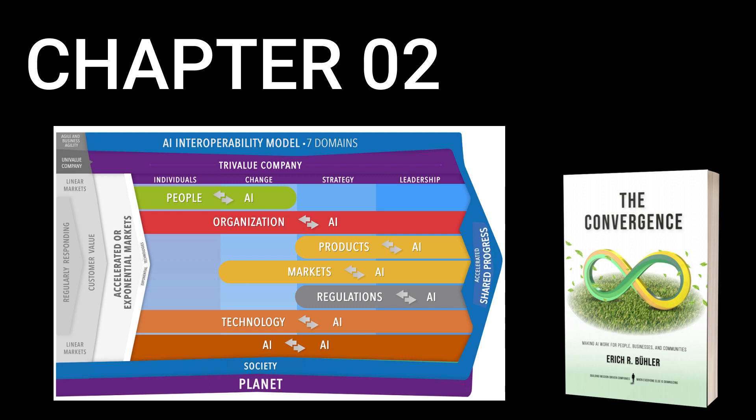The importance of a holistic approach. While each of these seven domains represents a critical area for AI interoperability, it is essential to recognize that they are not independent or isolated from each other. Instead, they are vastly interconnected and interdependent and must be addressed holistically and in an integrated manner to realize AI's full potential.